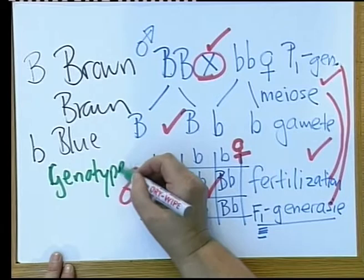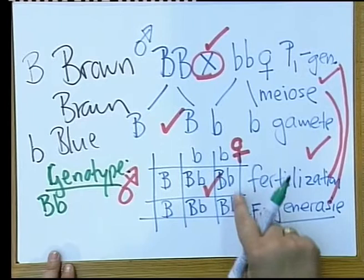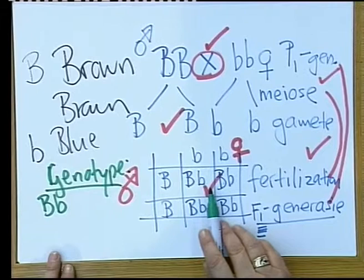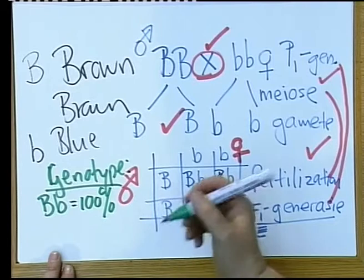You have to write what the genotype is, because the genotype is the genetic composition. And if you look at the offspring, all of them are capital B, small b. All of them are heterozygous. They are all the same. So this is your genotype. And if you are asked for the genotypic ratio, you can see all of them, 100% or 4 out of 4, will be capital B, small b.